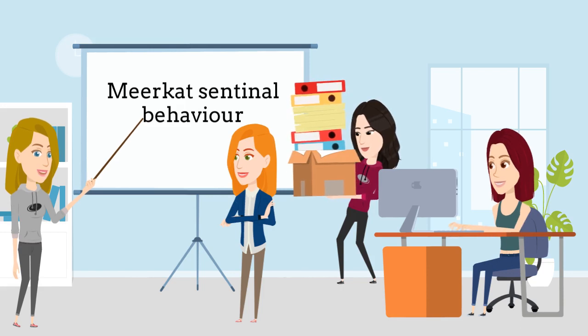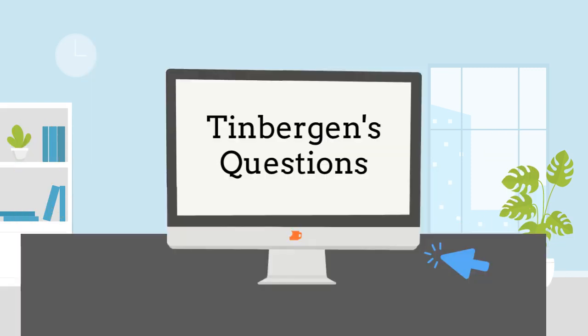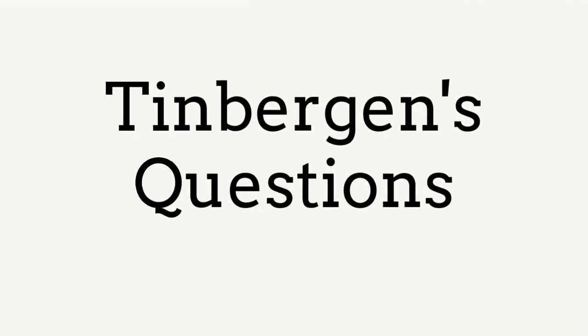The research process began after our behavioural observations. We researched information about the behaviour and Tinbergen's four questions. In 1963, Nicholas Tinbergen defined four questions to explain animal behaviour. These questions include ultimate and proximate questions which you will explore and apply to the sentinel behaviour of meerkats.